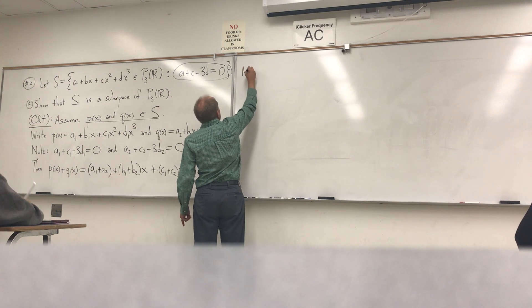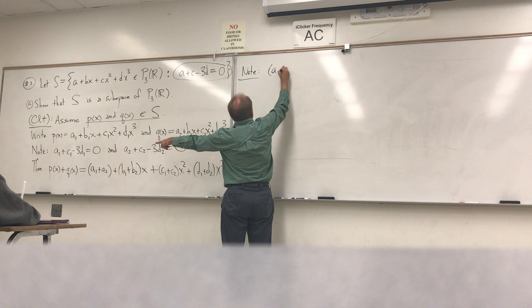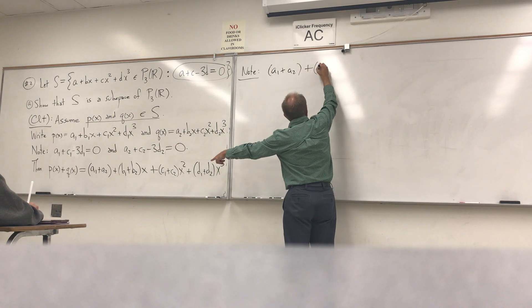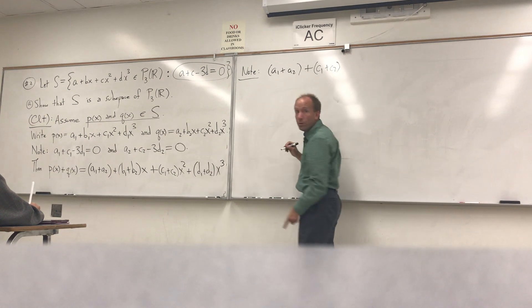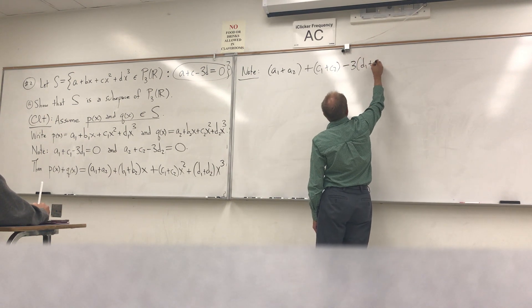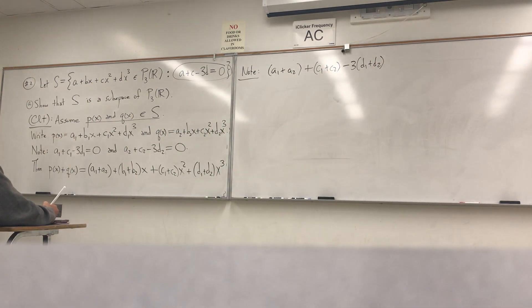Note that if we take the constant term, the constant term is a1 plus a2 plus the x squared term, which is c1 plus c2, and then minus 3 times the x cubed term.